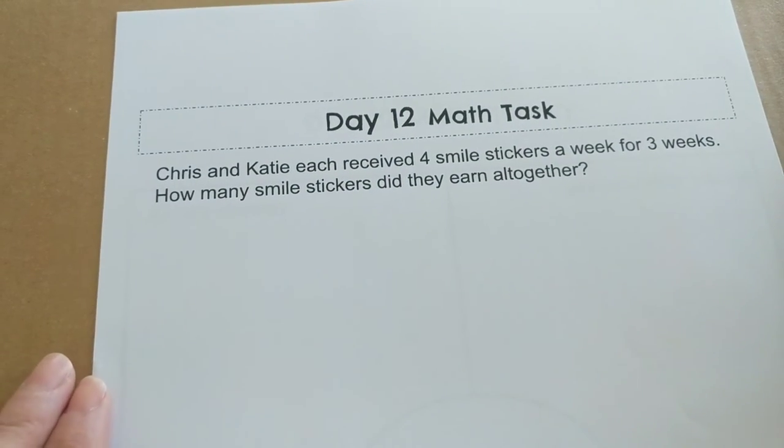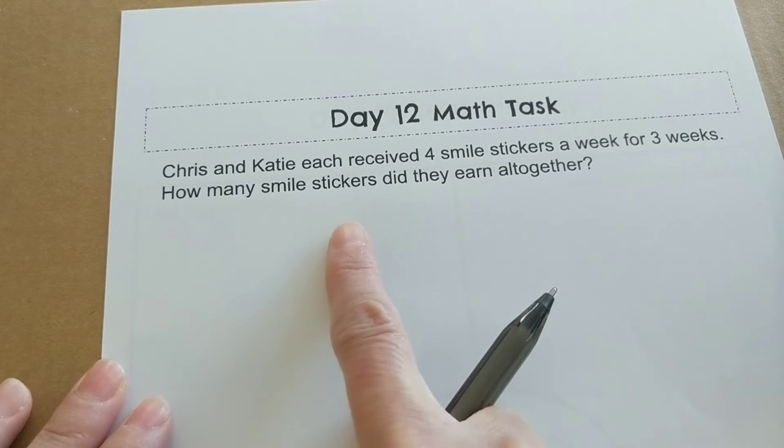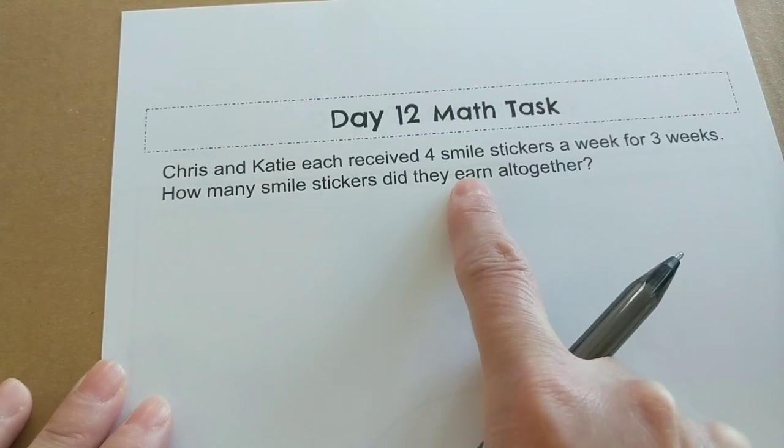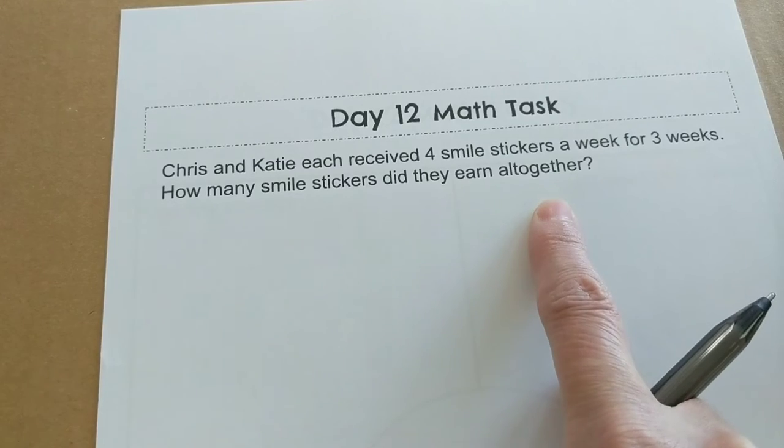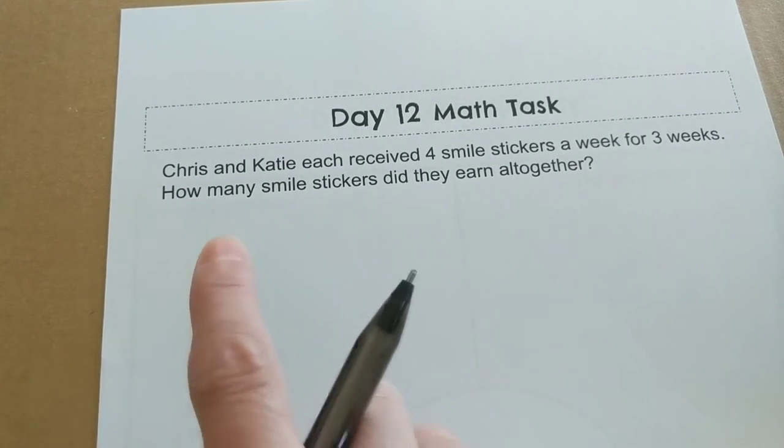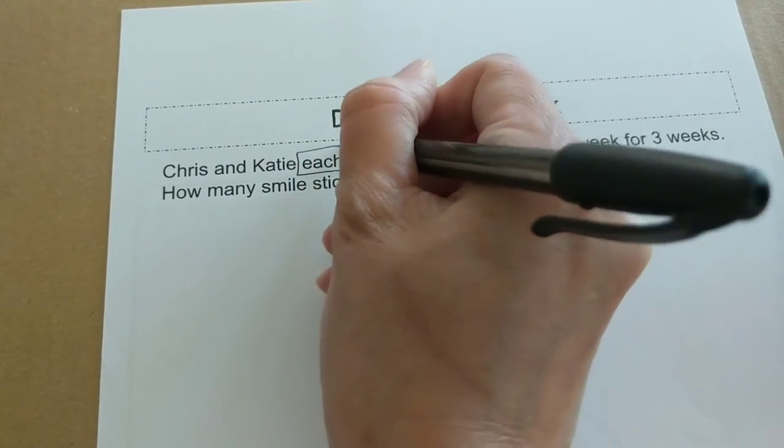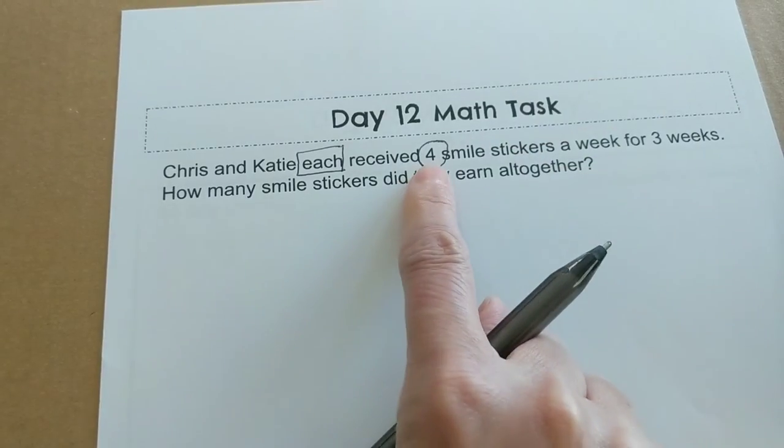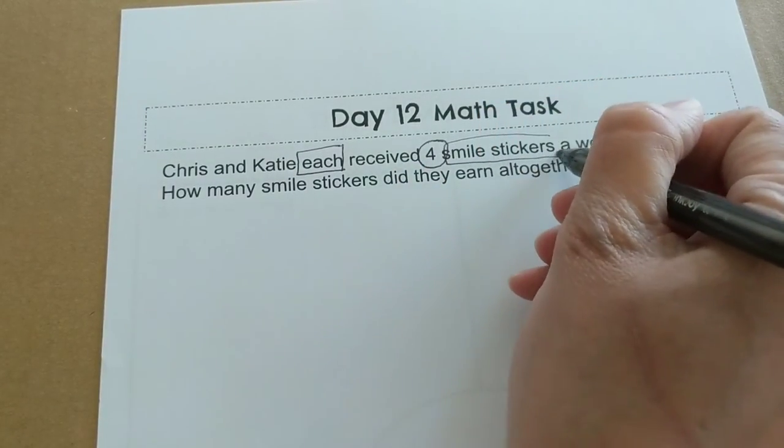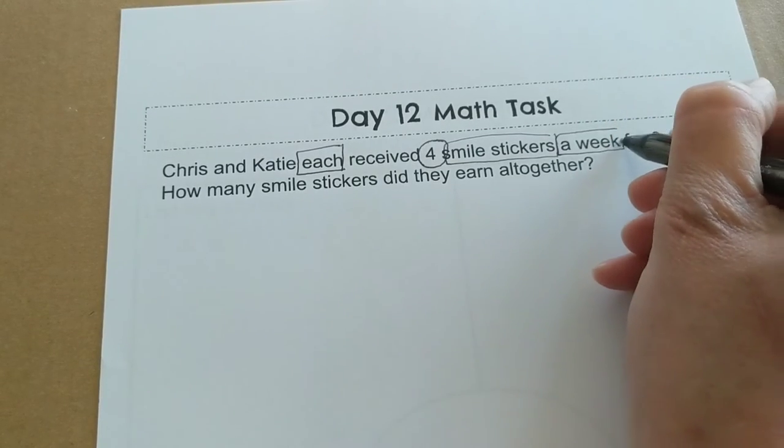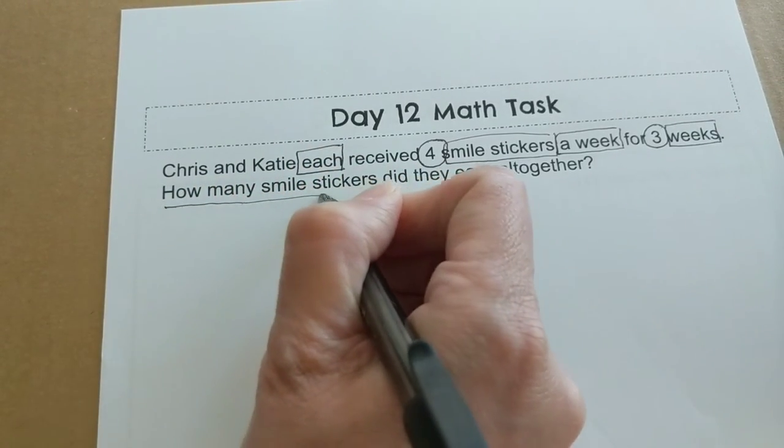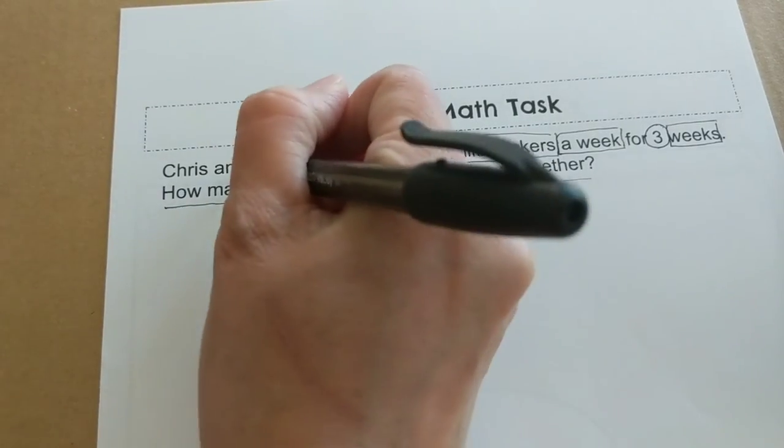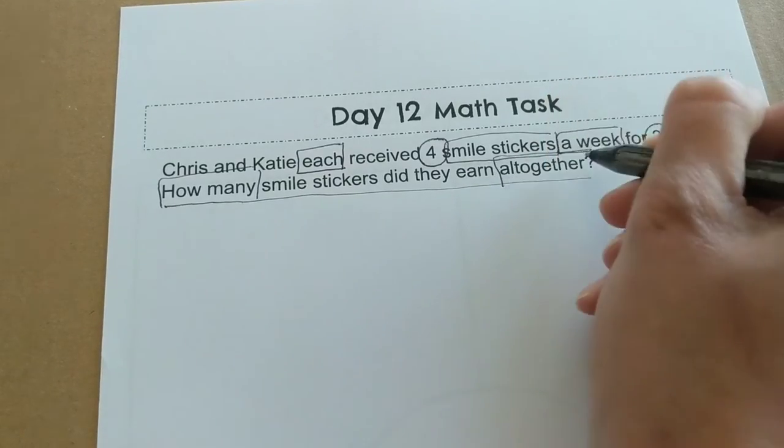For my day twelve math task, it is the same type of problem that we just did. I would like you to try it out on your own. I will set it up for you. Actually, this one is different. Excuse me. Chris and Katie each receive four smile stickers a week for three weeks. How many smile stickers did they earn all together? So they each, both of them, it's telling me each, going to box that, receive four smile stickers, let's do our cubes method, four smile stickers, and a week is important. Every week they do that for a total of three weeks. My question is, how many smile stickers did they earn all together?